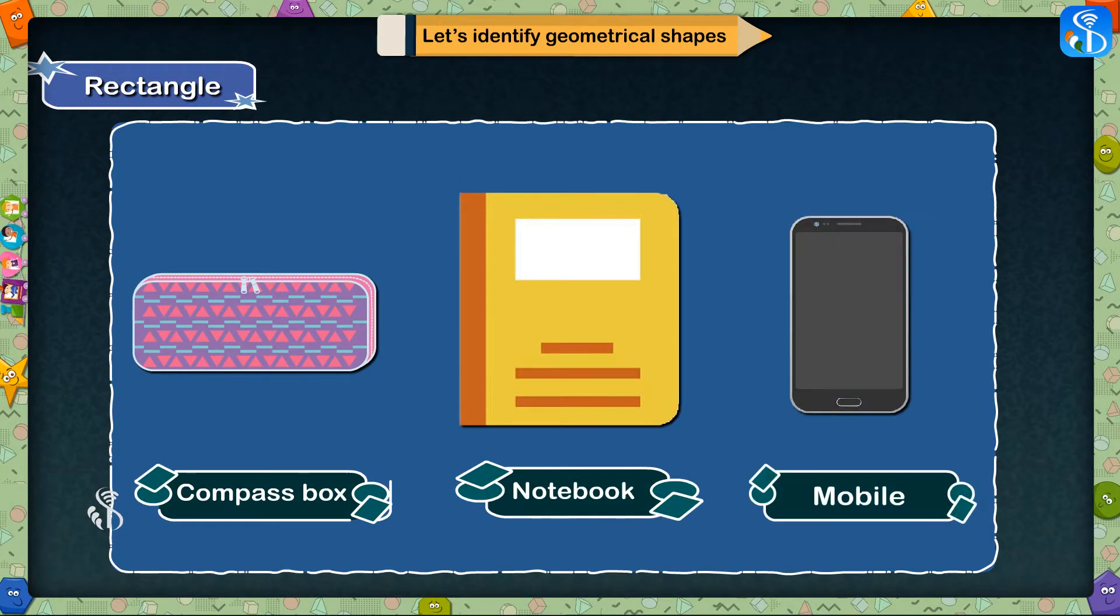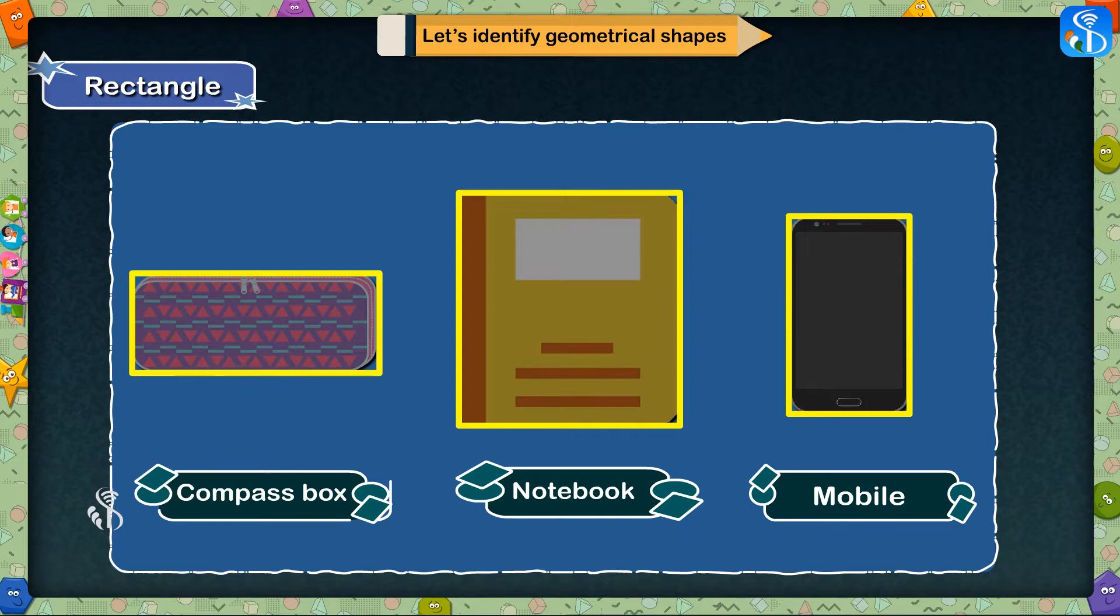Our compass box, notebook, and mobile phones are rectangular in shape.